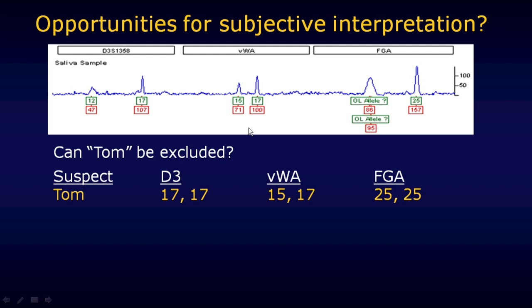Moving along to the VWA locus: the electropherogram shows a 15 and a 17, and sure enough Tom's reference profile also shows a 15 and a 17 — so he matches. At the FGA locus, Tom has a 25-25 in his reference sample, making him a homozygote. In the evidence sample, there is a prominent 25 allele labeled by the computer software — it's 157 RFUs tall, good shape. Tom has a 25 to give, so that's consistent.